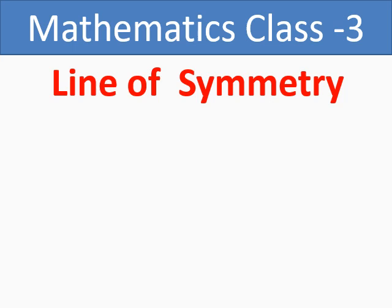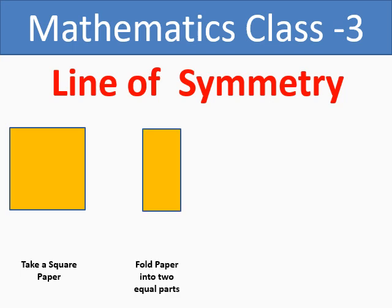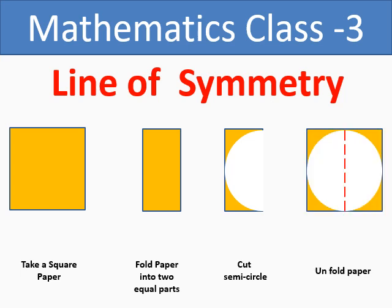Welcome to my channel. Today we will understand line of symmetry. Take a square paper, fold the paper into two equal parts, cut the semicircle from the paper, unfold the paper. So you will get two equal halves and you will get a line of symmetry which is vertical.